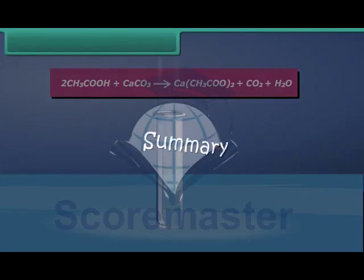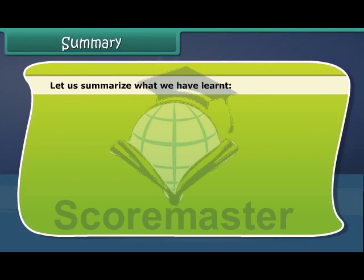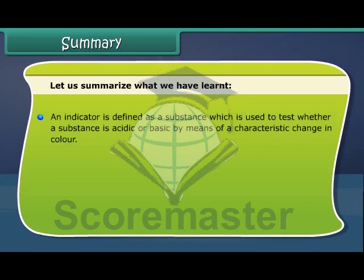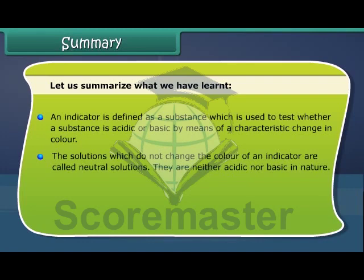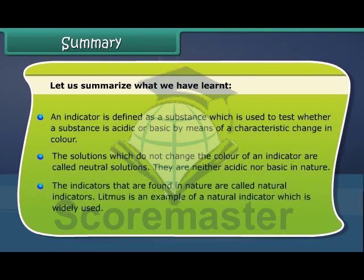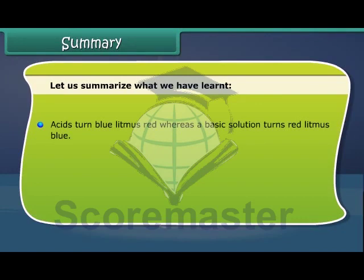Summary: An indicator is a substance used to test whether something is acidic or basic, by means of a characteristic color change. Solutions that do not change the color of an indicator are called neutral solutions — they are neither acidic nor basic. Indicators found in nature are called natural indicators; litmus is a widely used example. Acids turn blue litmus red, while a basic solution turns red litmus blue. The reaction between an acid and a base is known as neutralization.